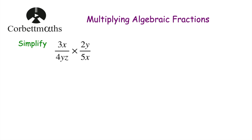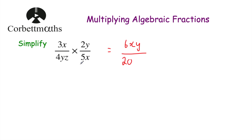Let's have a look at some algebraic examples. Simplify 3x over 4yz multiplied by 2y over 5x. If we're multiplying these together we multiply the numerators: three times two is six, and in alphabetical order we get xy. In terms of the denominator, four times five is twenty, and the letters y, z, and x in alphabetical order give us xyz. So we've multiplied 3x and 2y together to get 6xy, and we've multiplied 4yz and 5x together to get 20xyz.